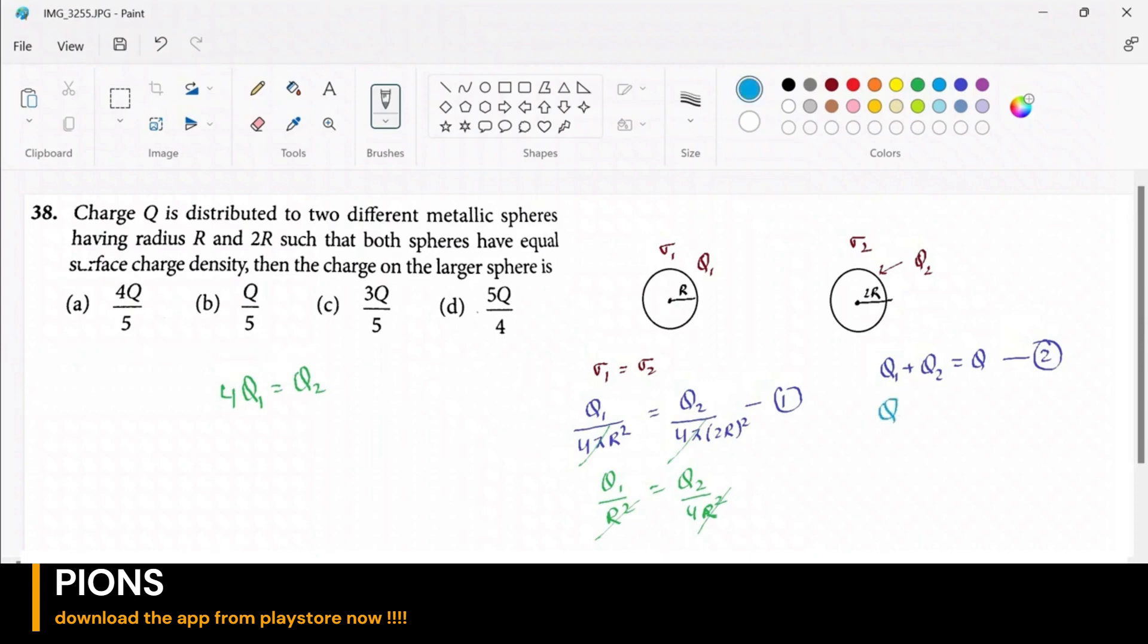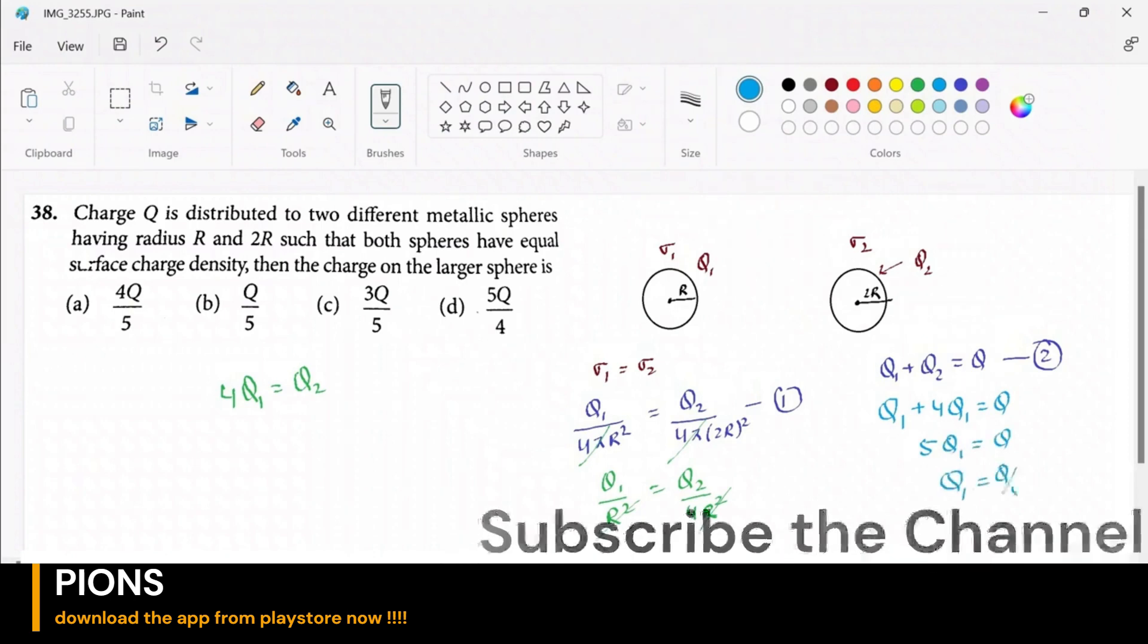Now let's substitute it in the second equation. So q1 plus 4 times q1 is equals to Q. So 5 times q1 is equals to Q, so charge on the first one will be Q by 5. So the charge on the first sphere is one fifth of the total charge.